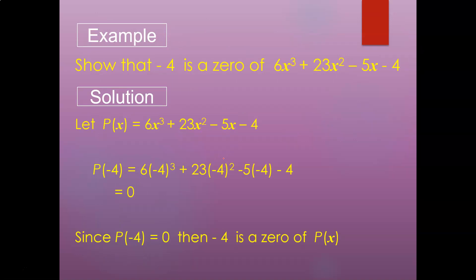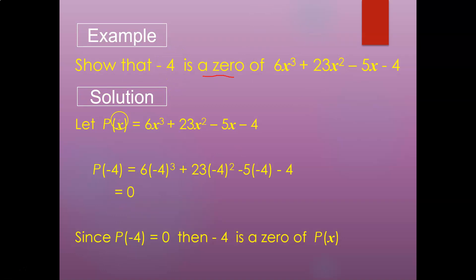Example: show that negative 4 is a zero of 6x³ plus 23x² minus 5x minus 4. A zero must be a single number value. To prove it, we substitute negative 4 into the polynomial — every x is replaced by negative 4. Calculating gives an answer equal to 0. Therefore, since P(negative 4) equals 0, negative 4is confirmed to be a zero of P(x).